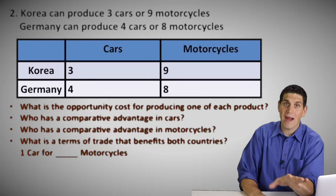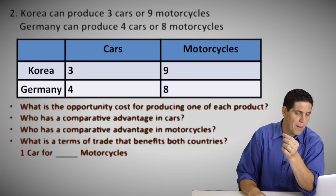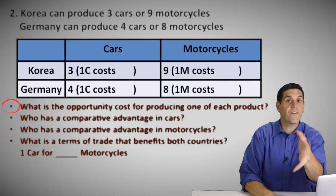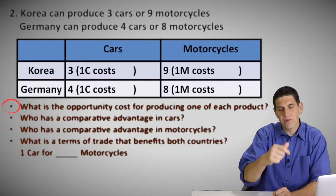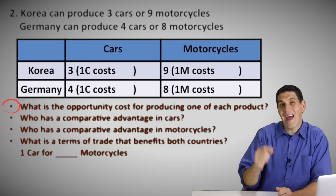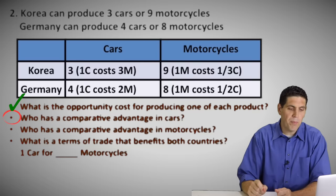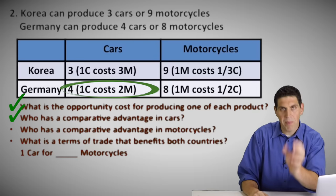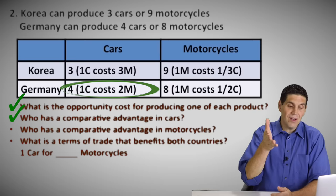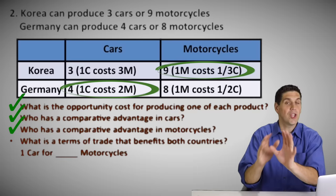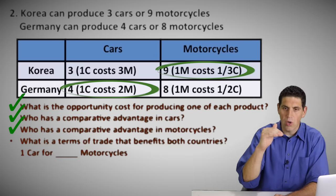A lot of students get tripped up on this stuff, and this video is about practice. We've got two countries — Korea and Germany. The per unit opportunity costs: for Korea, one car costs three motorcycles given up and each motorcycle costs one-third of a car. For Germany, one car costs two motorcycles and each motorcycle costs one-half of a car. Who has a comparative advantage in cars? Germany should specialize in cars because they only give up two motorcycles, while Korea gives up three. Korea should specialize in motorcycles because one-third is less than one-half.